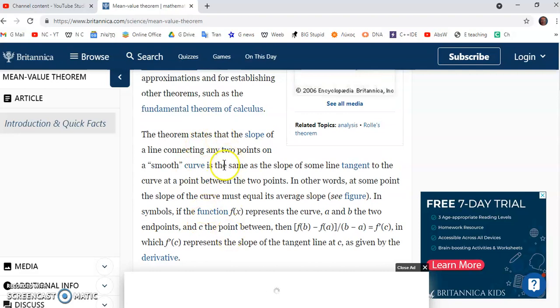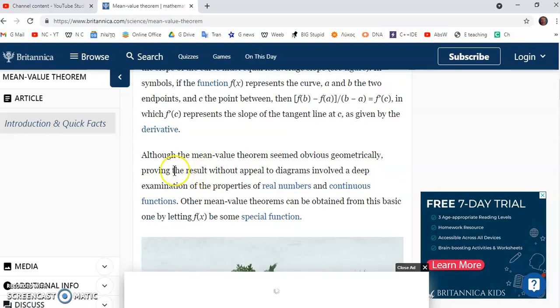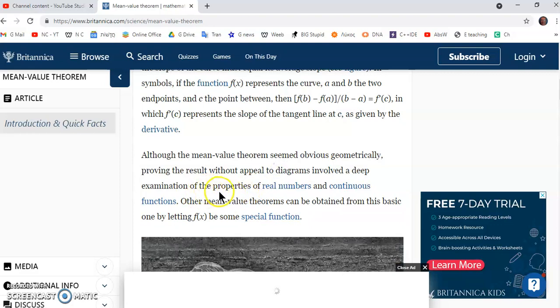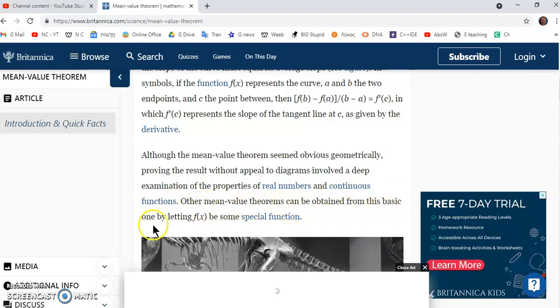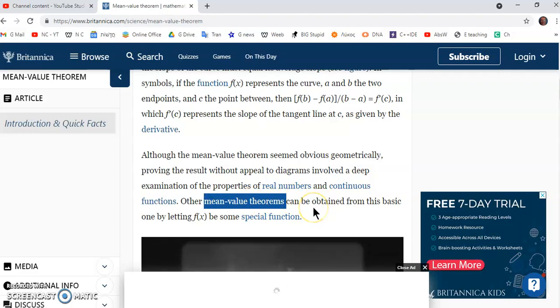So forget about the statement here because it's a lot of gibberish. This statement here is really a comical statement, a total giveaway about the state of mainstream academia. It says, although the mean value theorem seemed obvious geometrically, proving the result without appeal to diagrams involved a deep examination of the properties of real numbers - in other words, objects that don't exist because there is no such thing as a real number - and continuous functions. Absolute rot. Other mean value theorems can be obtained from this, which is even more laughable because the other so-called mean value theorems are also unremarkable and very similar to the mean value theorem, derived from common logic which I shall explain to you shortly.